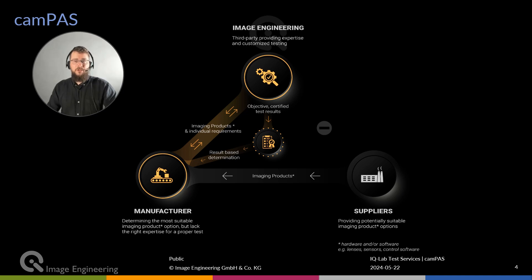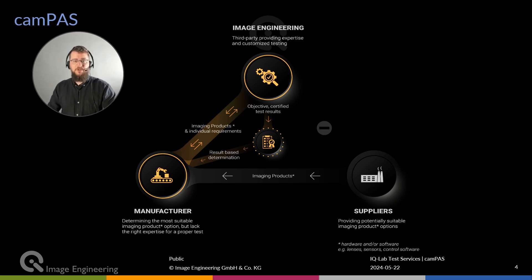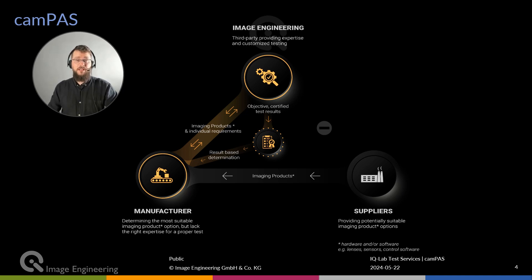Now, let's take a look at a typical process of qualifying components for a system and where Image Engineering might help. Usually, the manufacturers invest a lot of effort into the qualification process, which often involves multiple iterations of requirements, testing efforts on the supplier side, and subsequent testing on the OEM side. The lack of trust in the industry tends to drive up the cost and effort required for qualification. We at IQ Lab of Image Engineering offer a truly neutral position in this setting. We can help both parties decrease time, effort and associated cost of the qualification process.